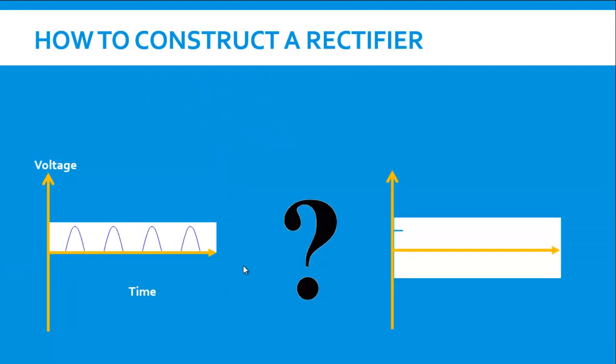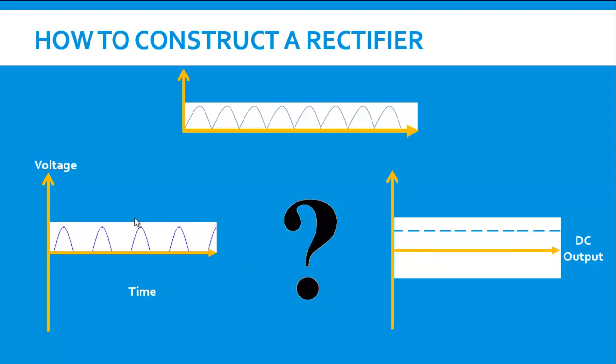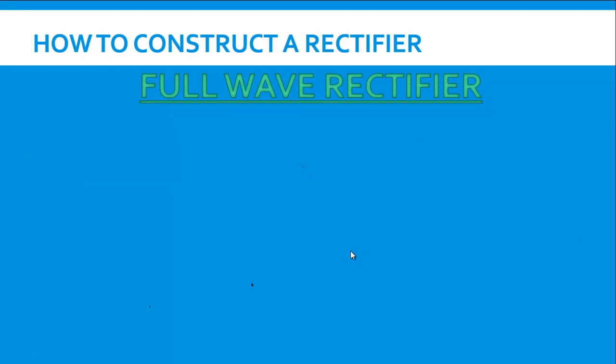But the question is that we want a stable straight line as a DC output. So the next logical step is to convert the negative values also to positive values in the sine wave and get a waveform like this. In order to get a waveform like that we need to make a full wave rectifier.